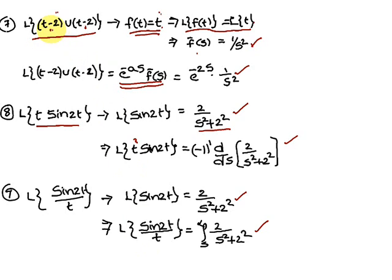Second shifting theorem, second model: Laplace of (t - 2)·u(t - 2). The unit step function is u(t - 2), and the argument also contains (t - 2), so the theorem applies directly. Consider f(t) = t. If it were (t-2)², consider f(t) = t²; if (t-2)³, consider f(t) = t³; and so on.